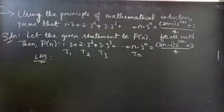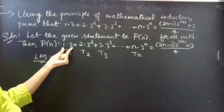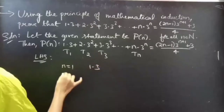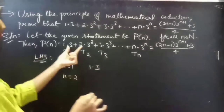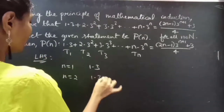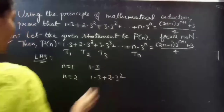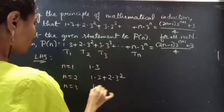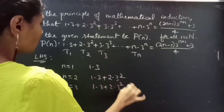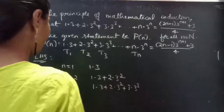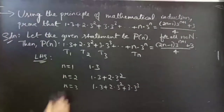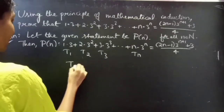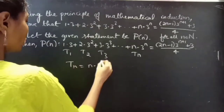When n=1, we will take only the first term from LHS. When n=2, we will take the sum of the first two terms, that is 1×3 + 2×3². For n=3, we will take the sum of the first three terms: 1×3 + 2×3² + 3×3³, like that. So here we are given Tₙ.